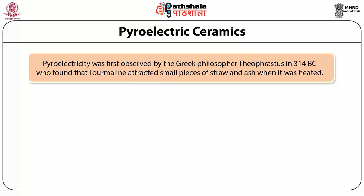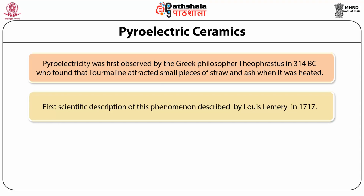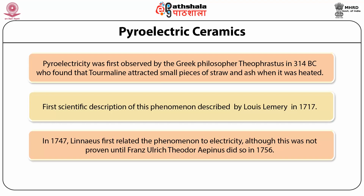Pyroelectricity was first observed by the Greek philosopher Theophrastus in 314 BC, who found that tourmaline attracted small pieces of straw and ash when heated. The first scientific description of this phenomenon was given by Lewis Lemery in 1717. In 1747, Linnaeus first related the phenomenon to electricity, although this was not proven until Franz Ulrich Theodor Aepinus did so in 1756.